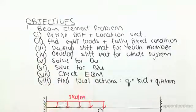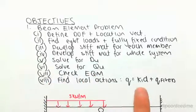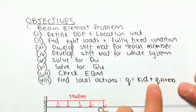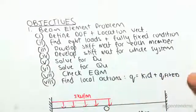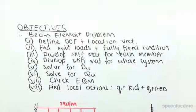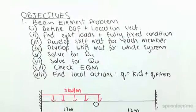We're then going to check the equilibrium to see it all makes sense, and then we're going to find our local actions where Q now equals K1D, which we saw in the previous video, but now we have this Q fixed term. We're going to see what that means in a sec, don't worry so much about it now, but that's the general process.